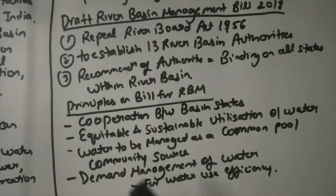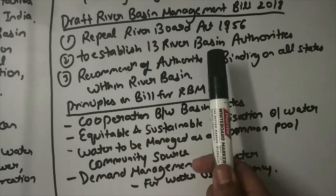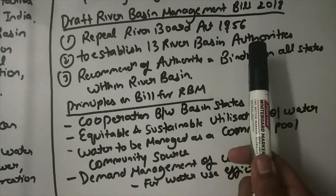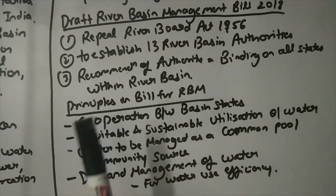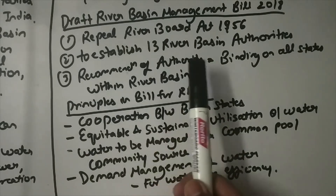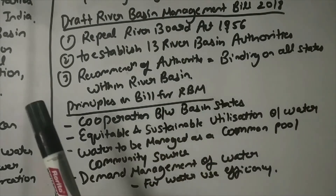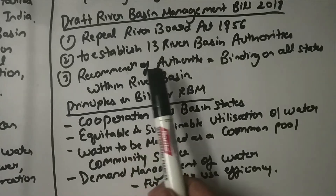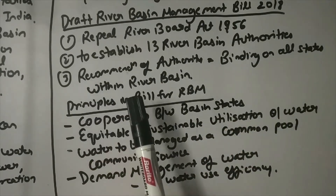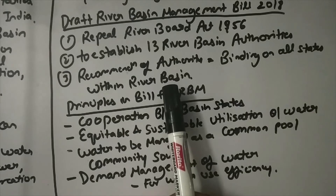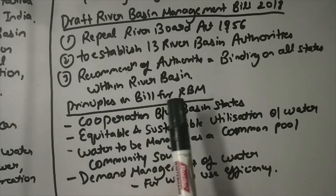The Draft River Basin Management Bill of 2018 features the repeal of the River Board Act of 1956. It seeks to establish 13 river basin authorities, and the recommendations of these authorities are binding on all states within the river basin.